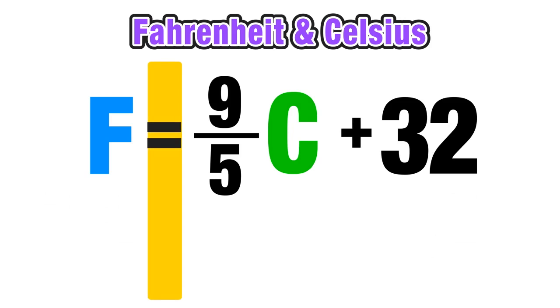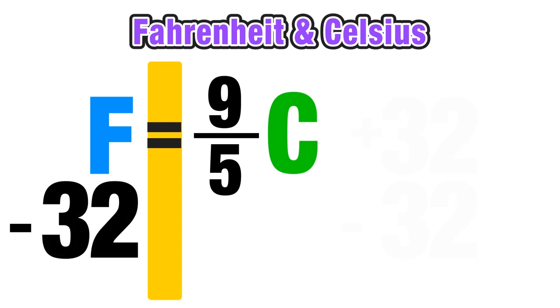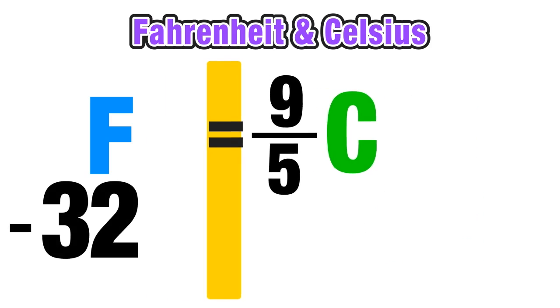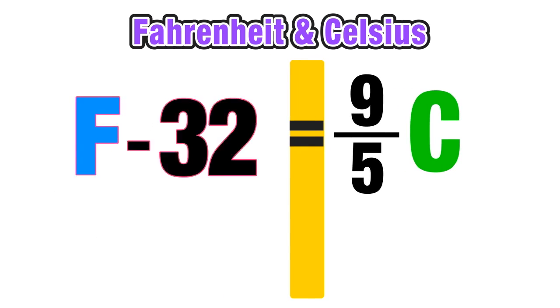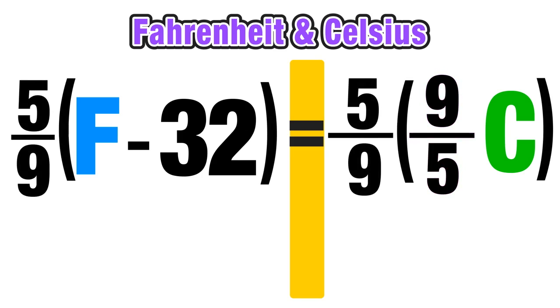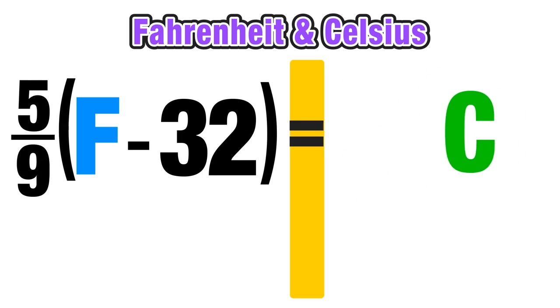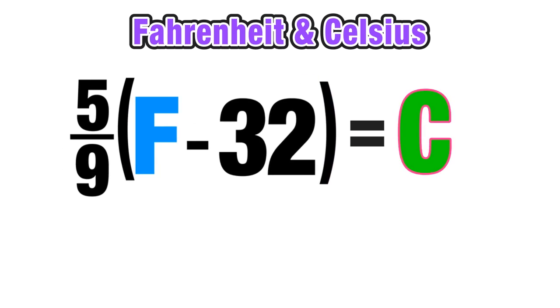We can solve this equation for C using a little bit of algebra. If we start by subtracting 32 from both sides of the equal sign, that will cancel out on the right side. On the left side, F minus 32 we'll leave as the expression F minus 32 since they are not like terms. Now on the right side, to get rid of that fraction 9 over 5, I multiply both sides by its reciprocal 5 over 9. Those fractions will cancel out, and now we have C by itself. Now we have the formula for converting degrees Fahrenheit to degrees Celsius.